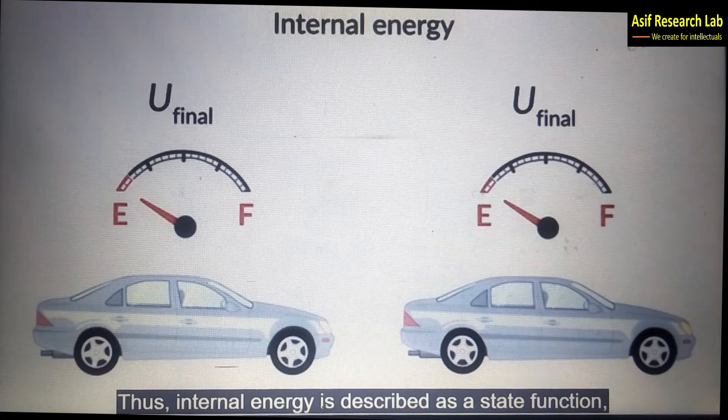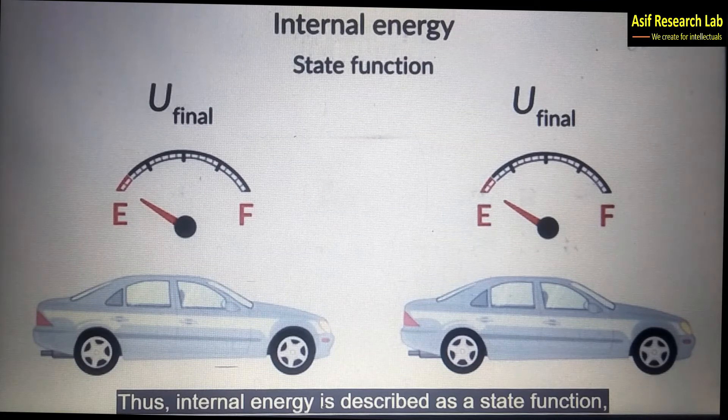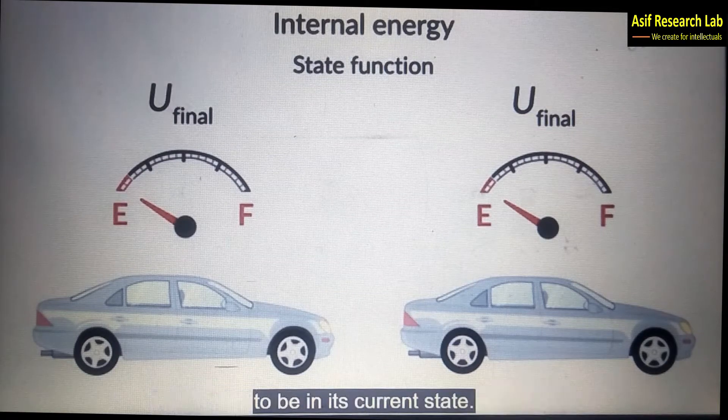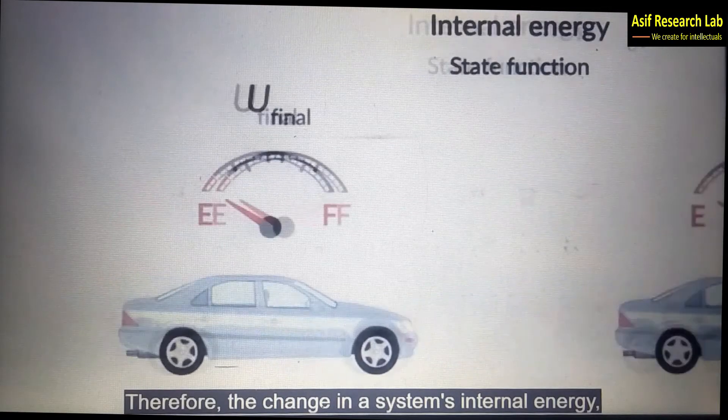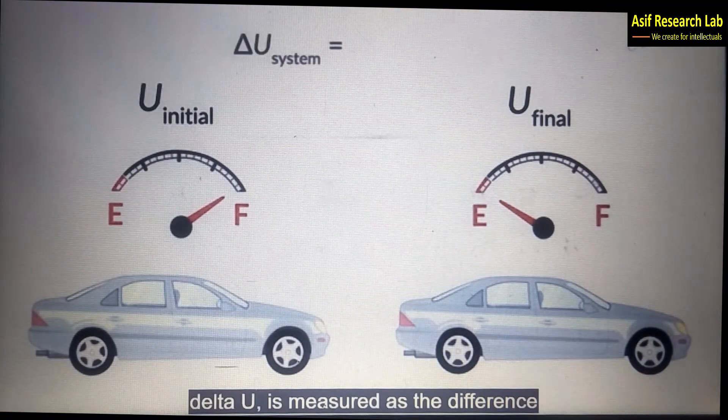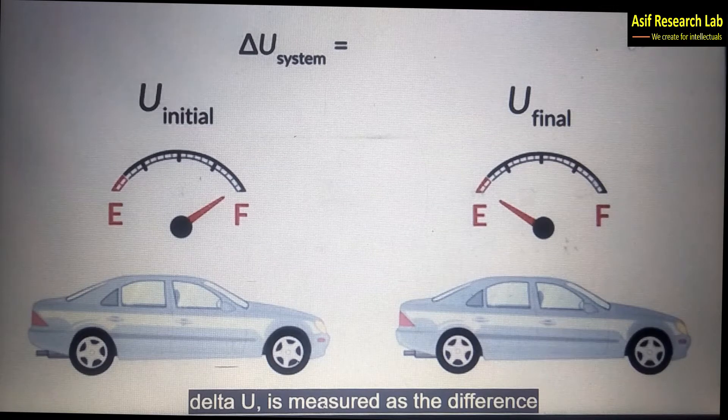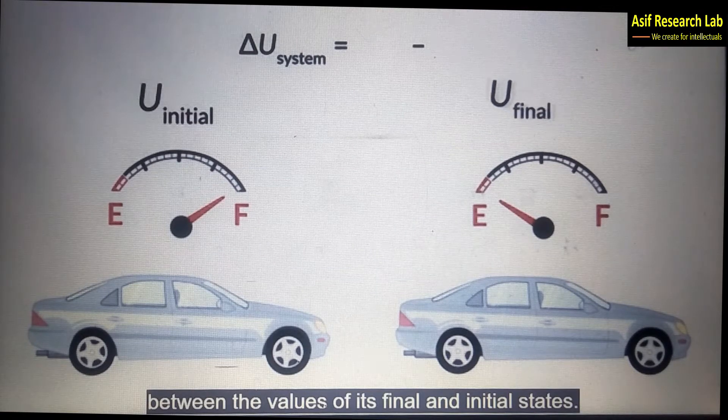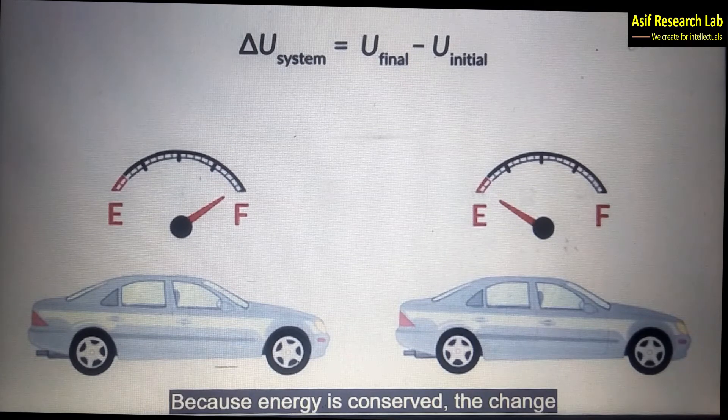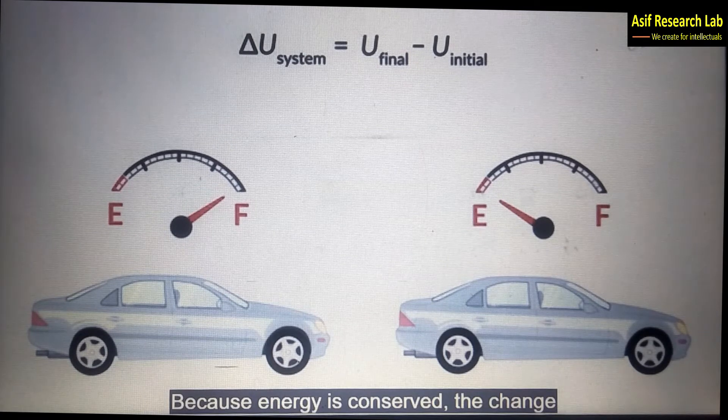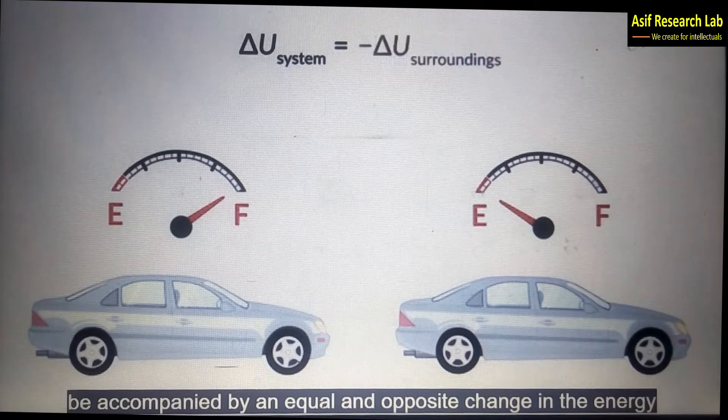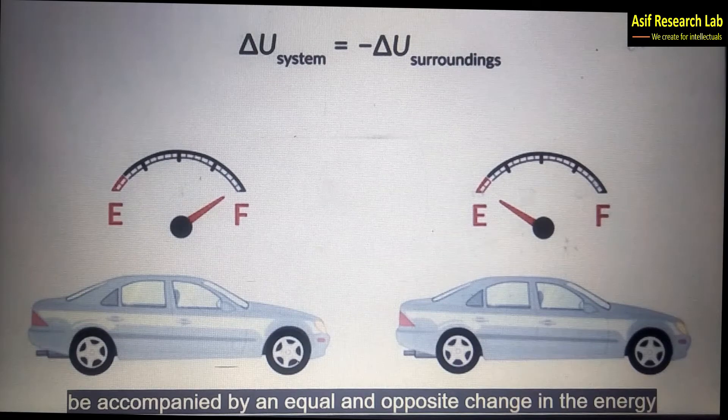Thus internal energy is described as a state function which is not affected by how the system came to be in its current state. Therefore the changes in a system's internal energy delta U is measured as the difference between the values of its final and initial states. Because energy is conserved the change in a system's internal energy must be accompanied by an equal and opposite change in the energy of the surroundings.